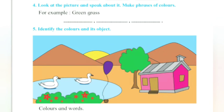Look at the picture and speak about it. Now we will make the phrases of colors, like green grass. White dark. Violet balloon. Yellow sun. Pink house.